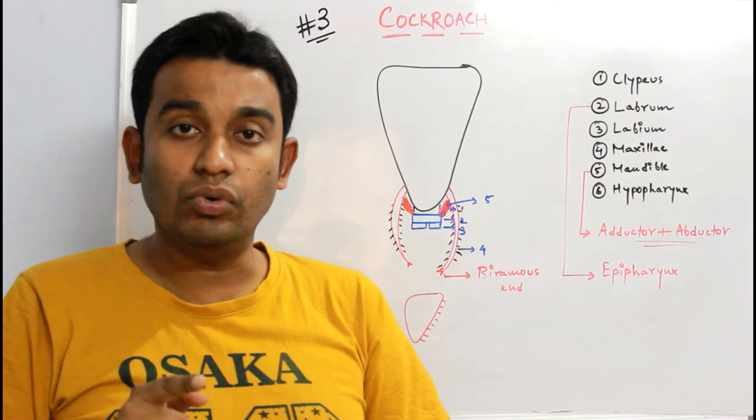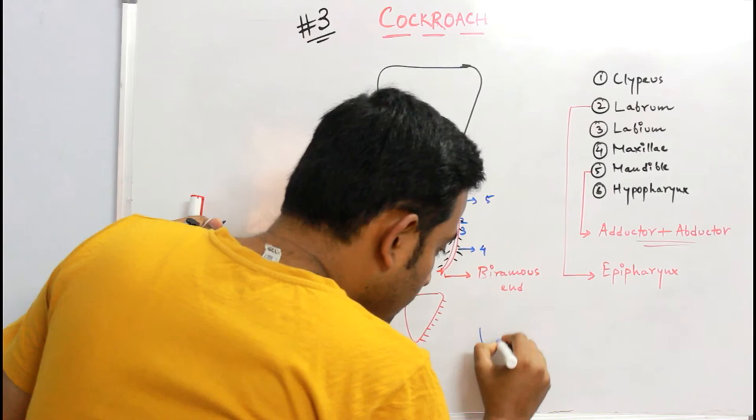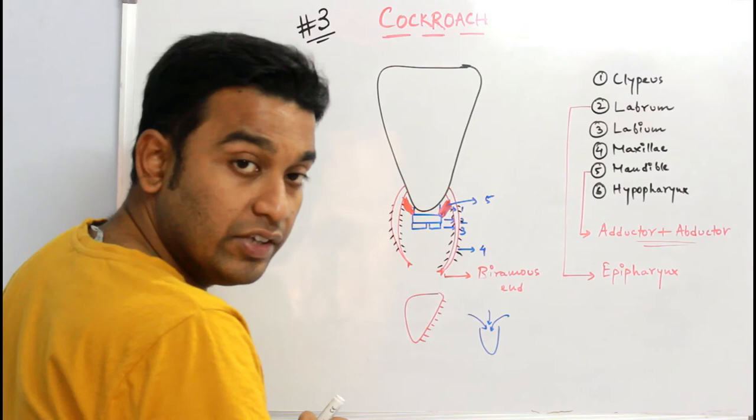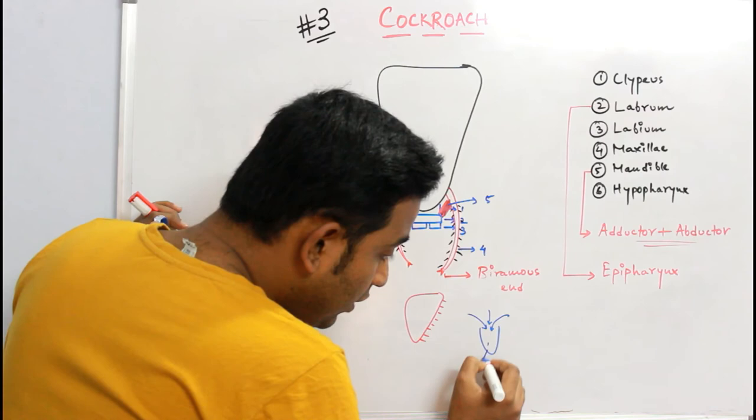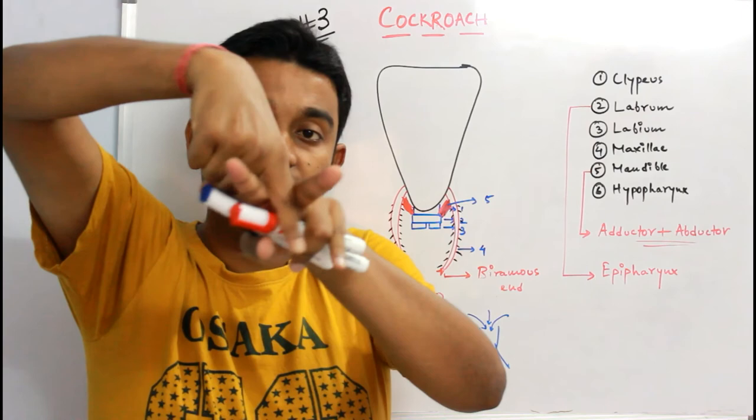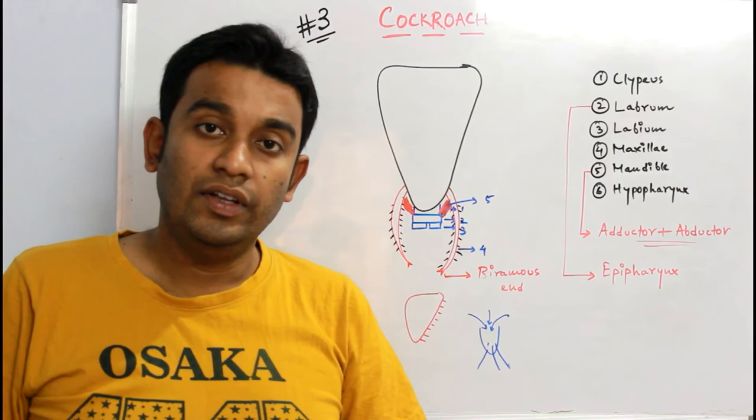Let me give an example. Say if this is a hypopharynx, to this hypopharynx the duct of the saliva or salivary gland will be released here. That means whatever saliva has to go out, the saliva will be oozing out from this. If you open the structure of a mouth of a cockroach like this, at the end of the buccal cavity you see something hanging, that is what we call as hypopharynx.